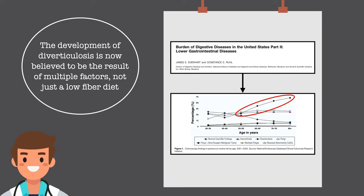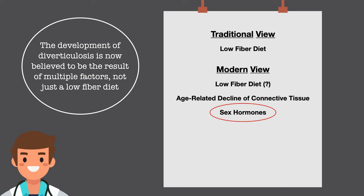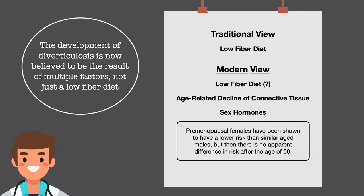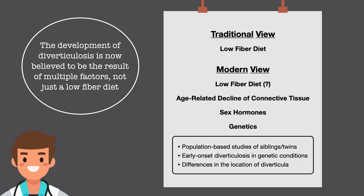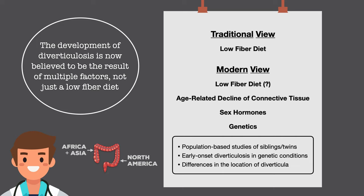Thus, the development of diverticula may be partly explained by an age-related decline in connective tissue. Another factor that's been suggested is sex hormones, with estrogen offering protection against diverticulosis. Premenopausal females have been shown to have a lower risk than similar-aged males, but there's no apparent difference in risk after the age of 50. Finally, and perhaps most importantly, there appears to be a genetic basis for diverticulosis, supported by population-based studies of siblings and twins, the observation of early-onset diverticulosis in connective tissue disorders like Marfan syndrome and Ehlers-Danlos syndrome, and differences in the location of diverticula — mostly on the left side in North America and mostly on the right side in Africa and Asia.